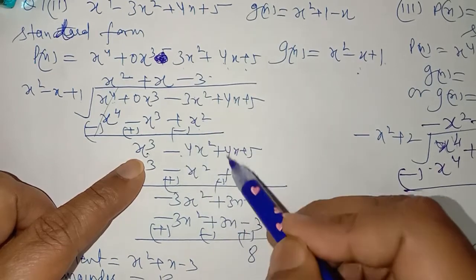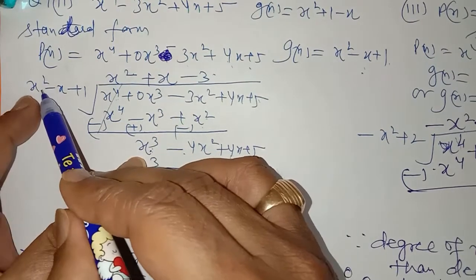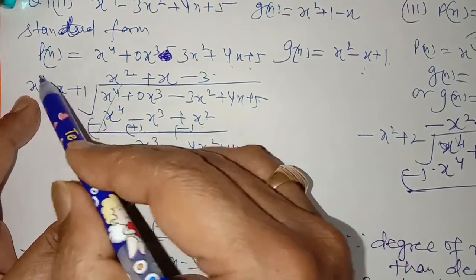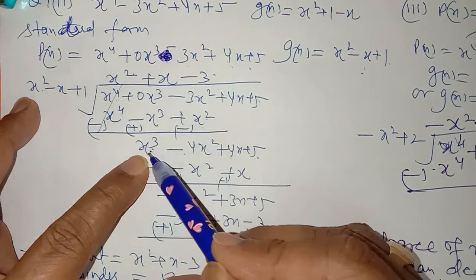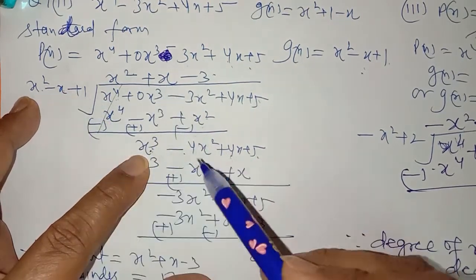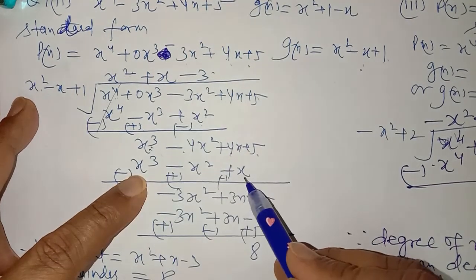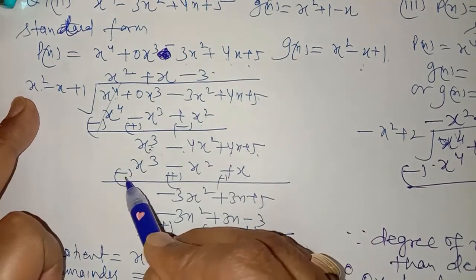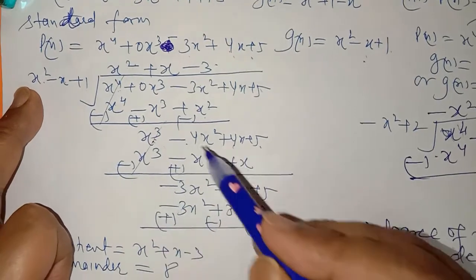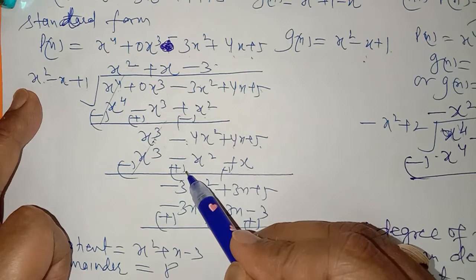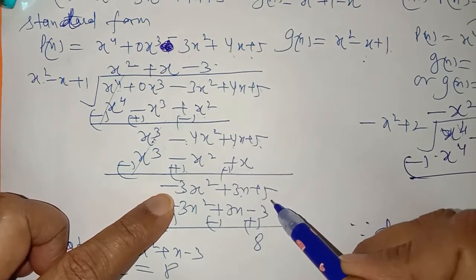Now you need x³. The divisor has x², so multiply by x to get x³. So the next quotient term is plus x. Multiply divisor by x: x³, minus x², and plus x. Write like terms below like terms. Sign change for subtraction — cancel. You get minus 4x² plus 1, combined with remaining terms, giving minus 3x² plus 3x plus 5.